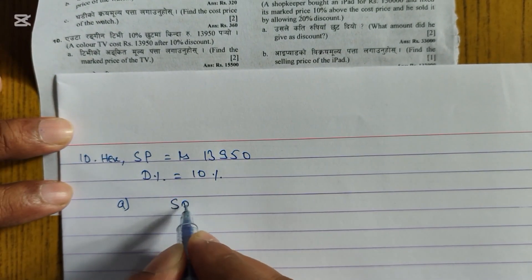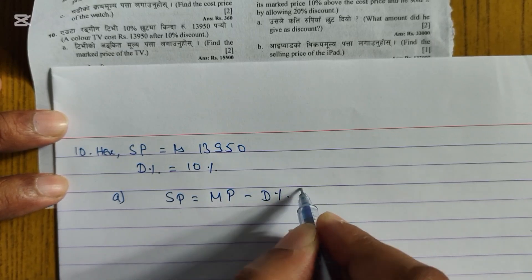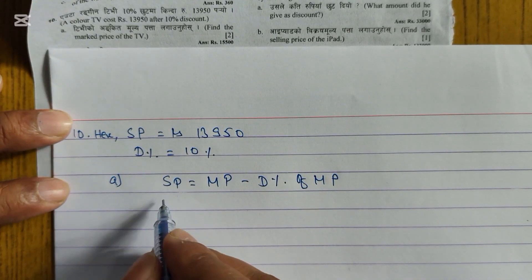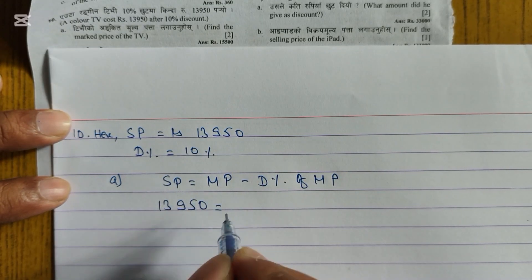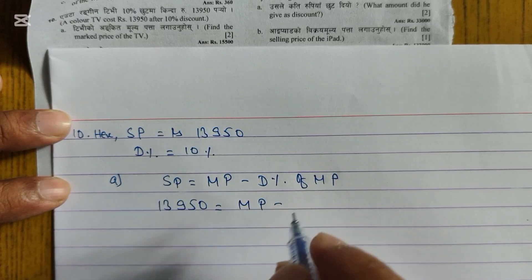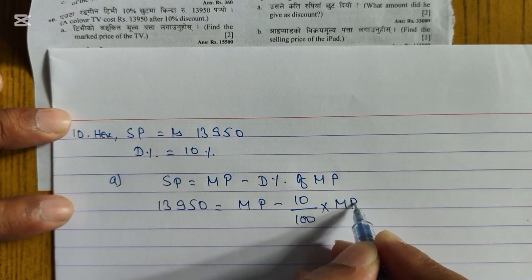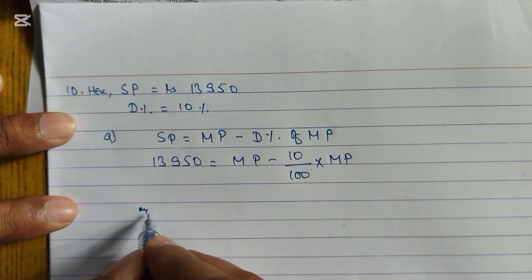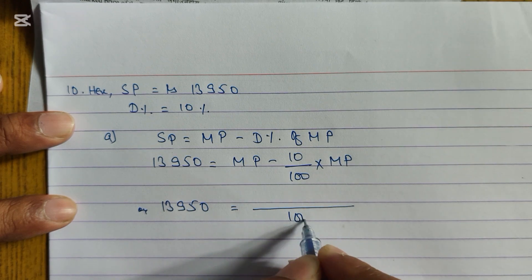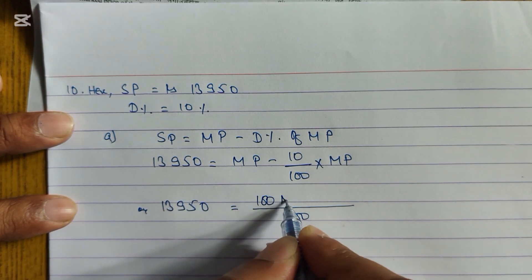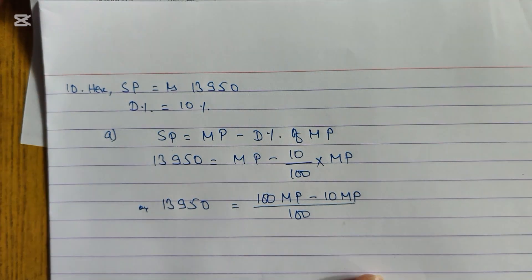Using the selling price formula: SP = MP minus discount percent of MP. So 13,950 = MP minus 10% of MP. That gives us 13,950 = MP minus (10/100) × MP. Simplifying: 13,950 = (100MP minus 10MP) divided by 100, which equals 90MP divided by 100.